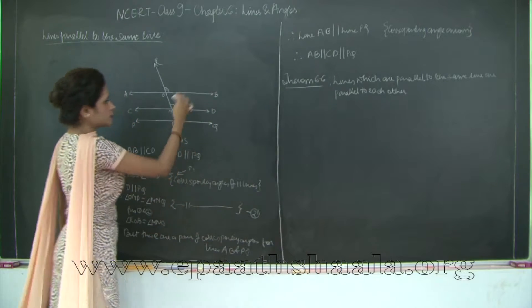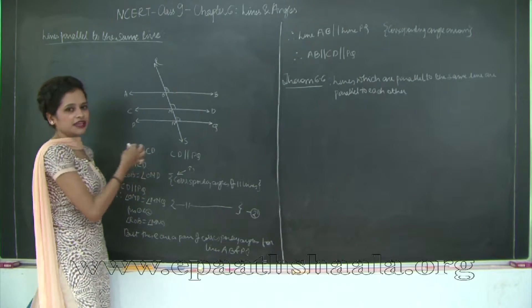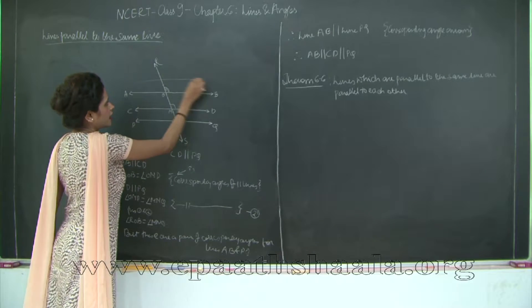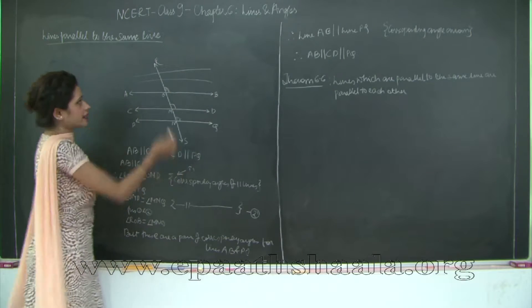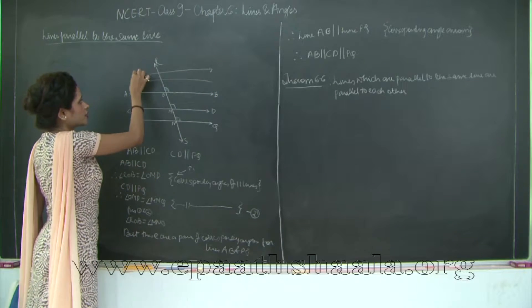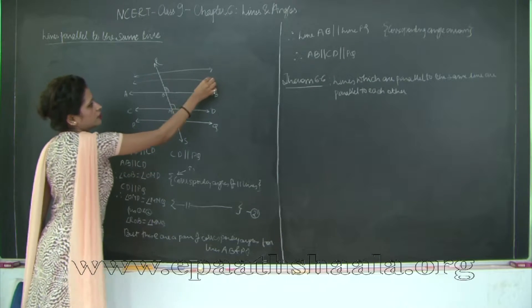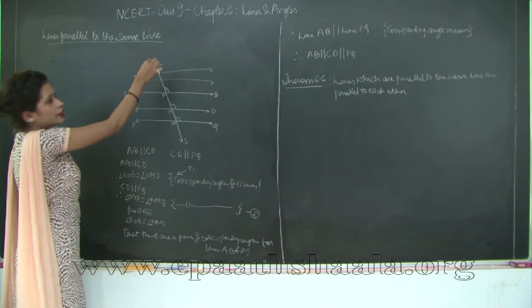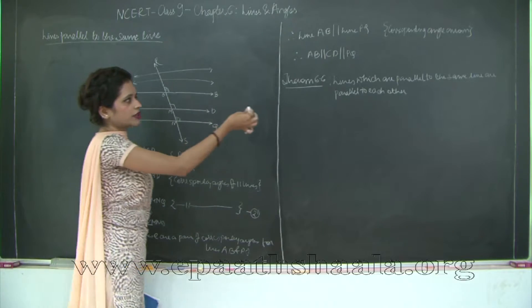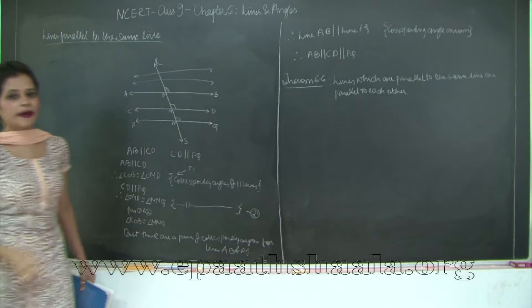So here we just learnt about three lines. This concept can be extended for n number of parallel lines. If you had another four or five lines parallel to any one of these lines, you could say that line is parallel to all others. This concept, Theorem 6.6, is applicable for all parallel lines.